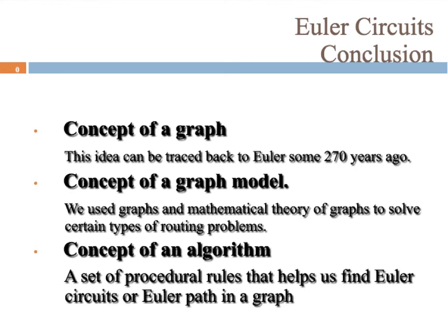Looking back on the entire chapter: we've gone over the general concept of what a graph is, created by Euler some 270 years ago. Make sure you're familiar with your terminology and vocabulary. We've covered the concept of a graph model — taking a word problem and creating a model for it. Third, the concept of algorithms: there were a couple of different theorems we went over. Knowing those rules lets you look at a graph and tell right away whether it has a circuit or path, so you can solve problems much more quickly.